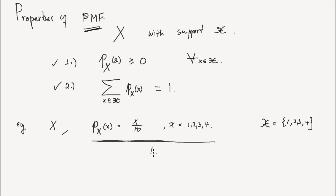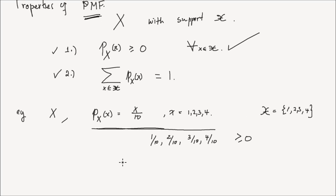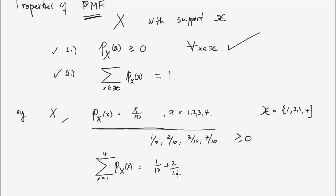If this is a valid PMF, it should satisfy the first and second conditions. Plug in 1, you get 1 over 10; plug in 2, you get 2 over 10; plug in 3, you get 3 over 10; or 4 over 10. All of these values are greater than or equal to 0, so the first condition is satisfied. For the second condition, the sum from x equals 1 to 4 of the PMF equals 1/10 + 2/10 + 3/10 + 4/10, and if you sum, you get 1. So this is a valid PMF.